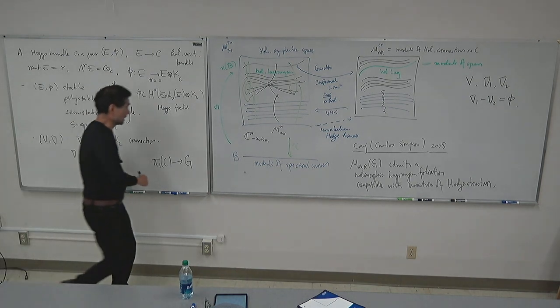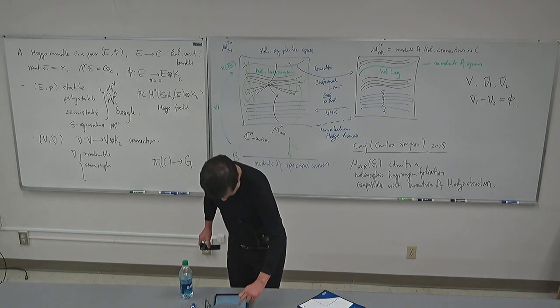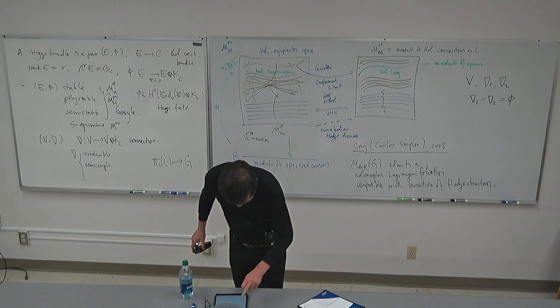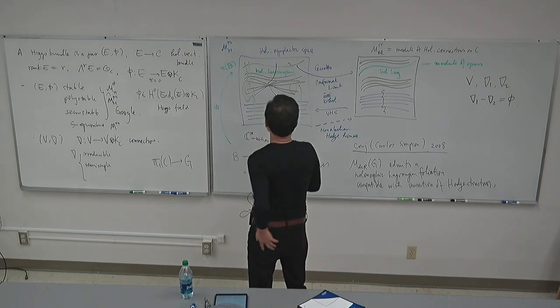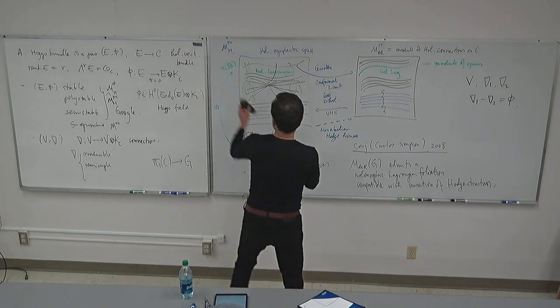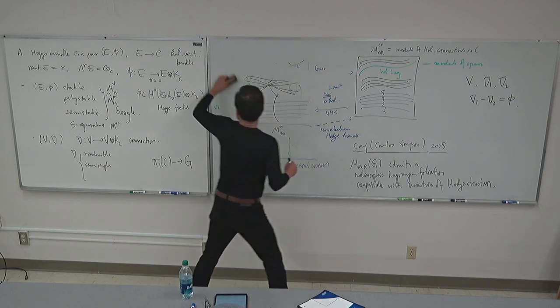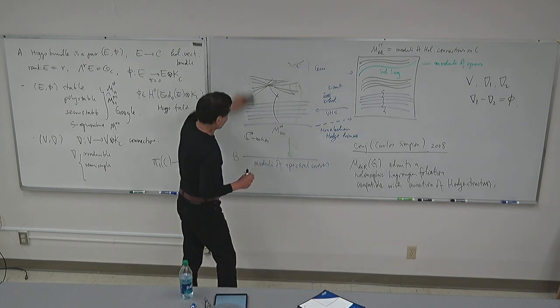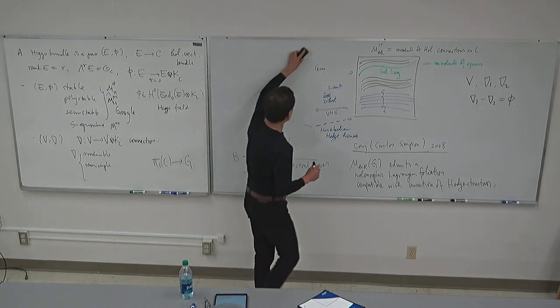So these are the corresponding moduli spaces. Now I think I should mention: yes, this picture is gone. The definition of the Gaiotto correspondence, then analysis of that.